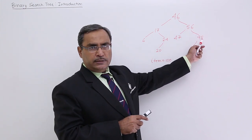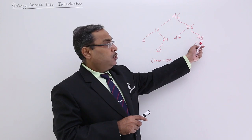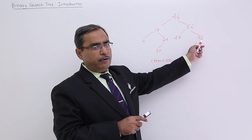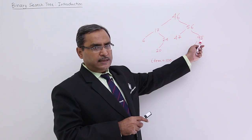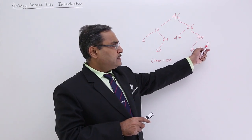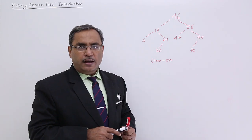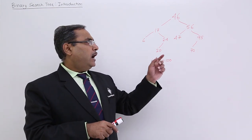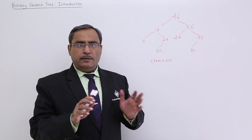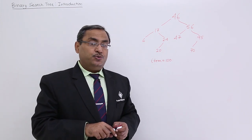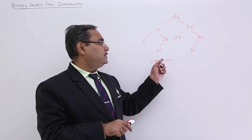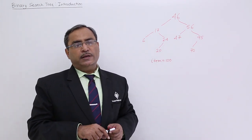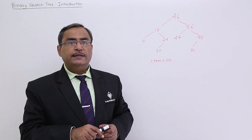Since 56 is lesser than 100, I will come down to its right child. Now 95 is not equal to 100, but 95 is lesser than 100, so I should go to its right subtree — right child. But 95 does not have any right child, so 100 is not there and unsuccessful search is declared. Here you see, I need not compare 100 with all the values in the binary search tree, so searching can be done very easily.